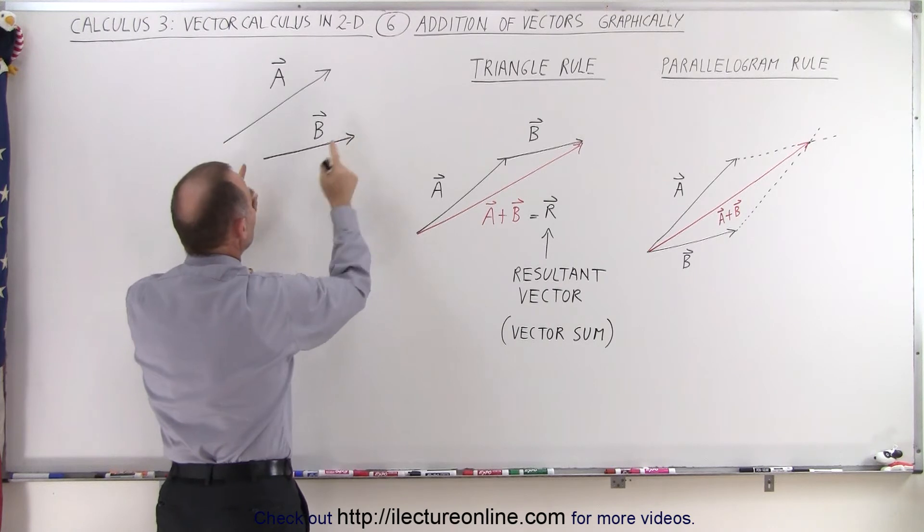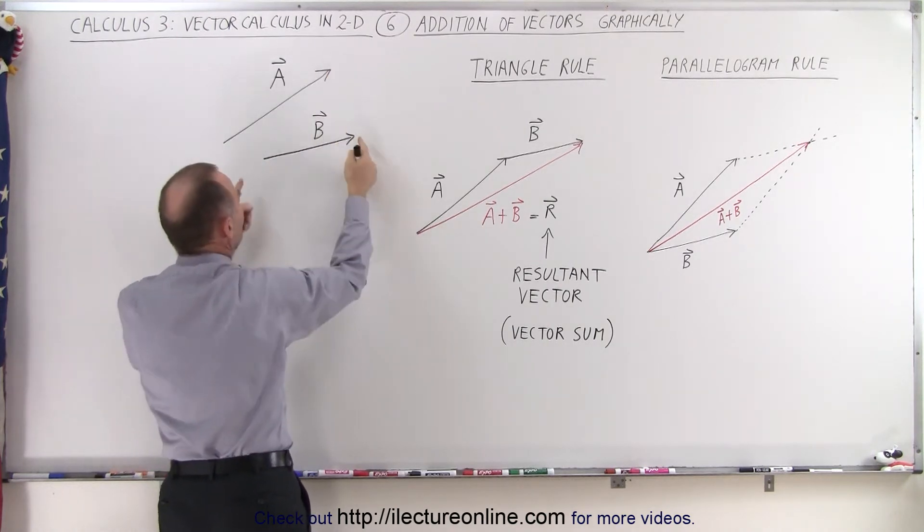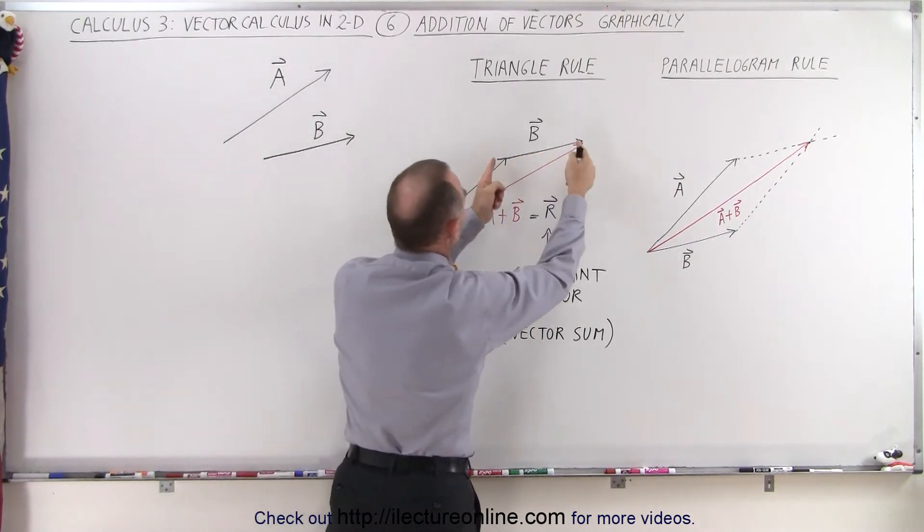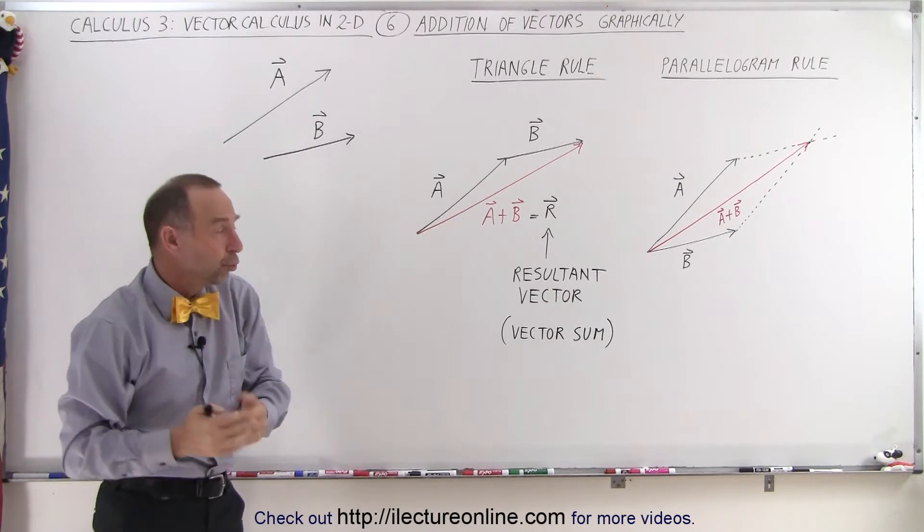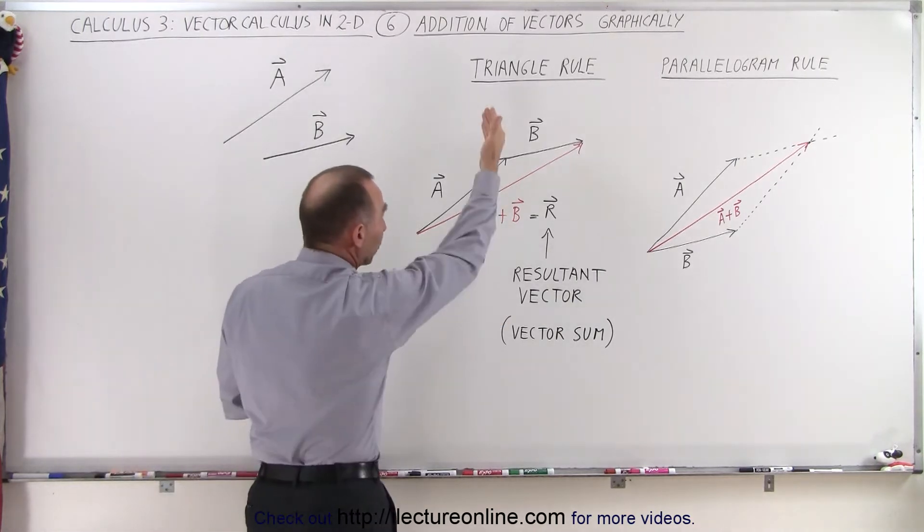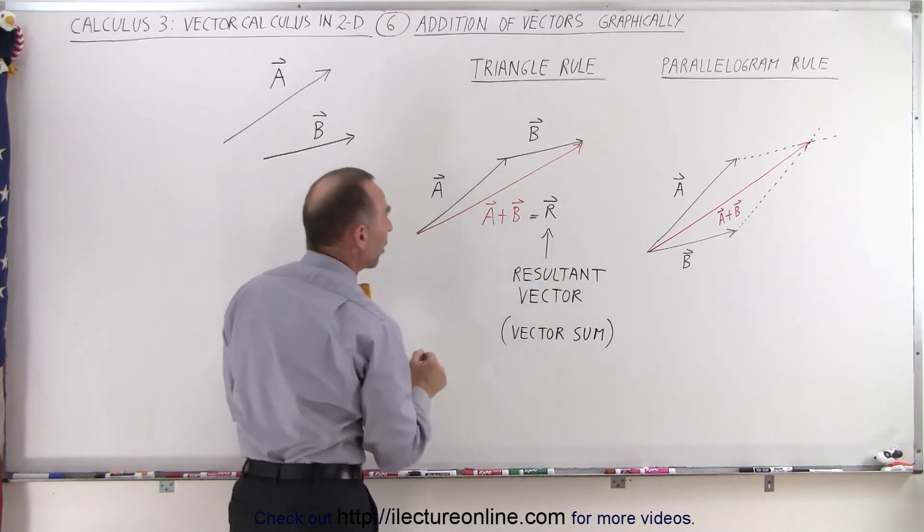Then we take vector B and we take the tail of vector B and connect it to the tip of vector A. So we just move vector B and move it right there. Now, the resultant or the sum of those two vectors, and that's what we call it when we add two vectors together graphically, we either get the resultant or we get what we call the vector sum.